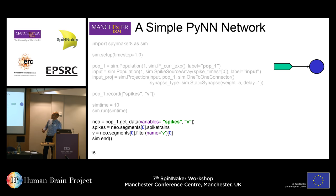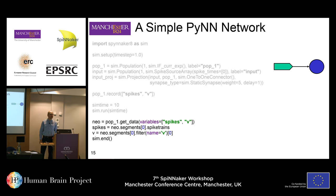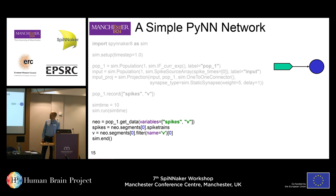We say Neo.segment0, because a Neo object can actually store data from various runs in one object. You can say run, run, reset, run again and it'll give you two segments. For today just grab segment0. Then you can get the spikes data out, which is in the form of a spike train, or you can get the V data out — the easiest way is to do a filter where the name is V. Because filter returns a list, just grab the 0, even if it's the only element.